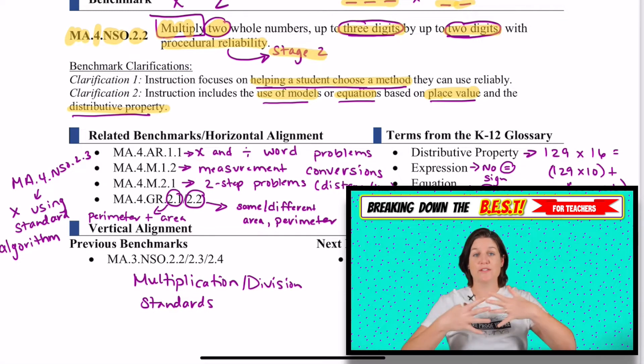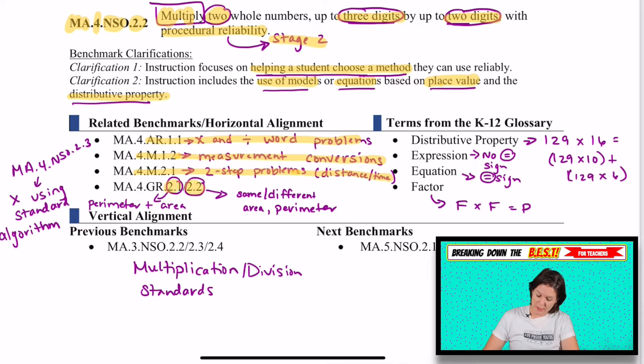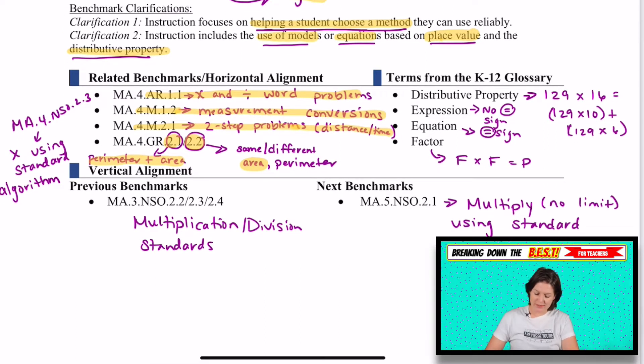Now there's a lot of craziness here with the horizontal alignment, and that's because this is a multiplication standard and we know how important multiplication is in fourth grade and third grade and fifth grade and all the grades. We're always multiplying. AR is the multiplying and dividing word problem standard, AR 1.1. 4.M.1.2 is a measurement conversion standard. Later on, we'll have 4.M.2.1, which is a two-step problem using distance and time. We also have some perimeter and area standards, really focusing on the area there, not so much with the perimeter, unless it's the square, because then you would be multiplying by four sides. I was surprised, though, that they didn't connect it with MA.4.NSO.2.3, which is the next standard, and that's where we'll multiply using standard algorithm, but more on that later in a video specifically dedicated to that standard.